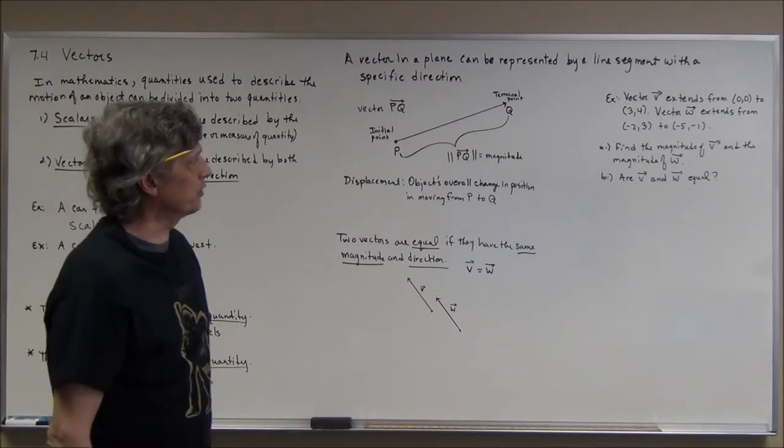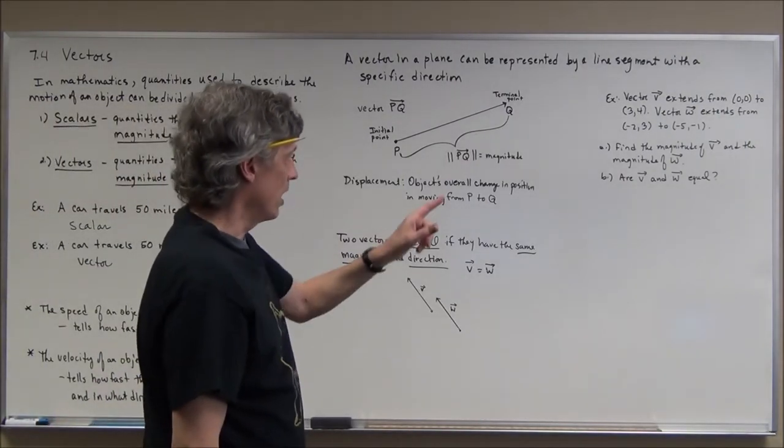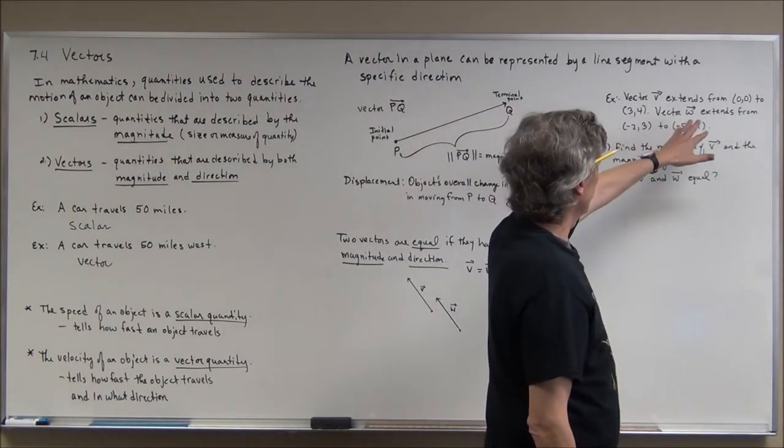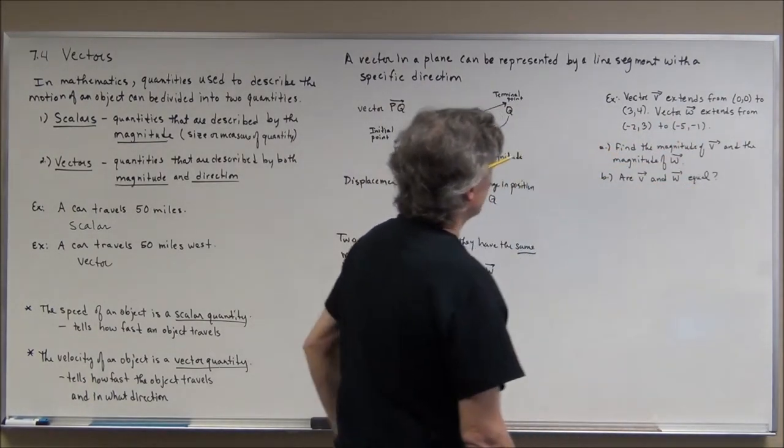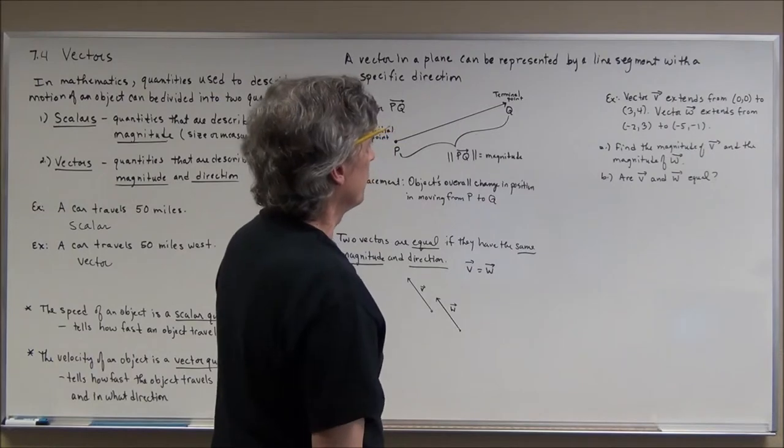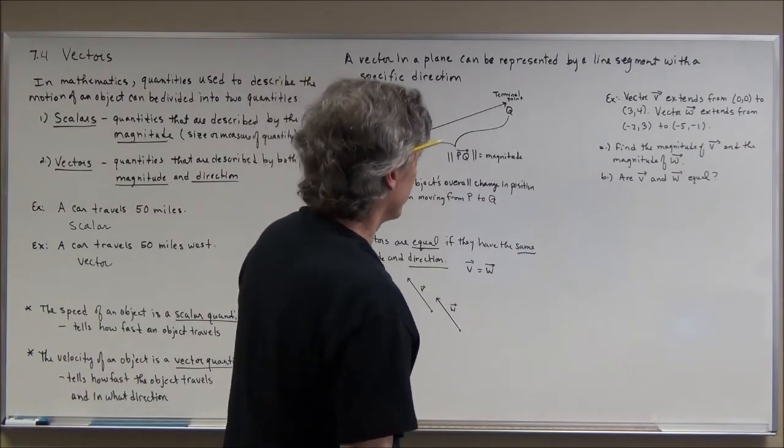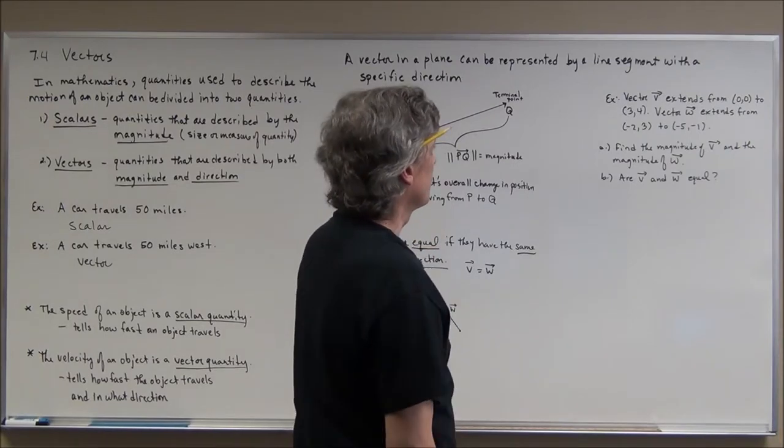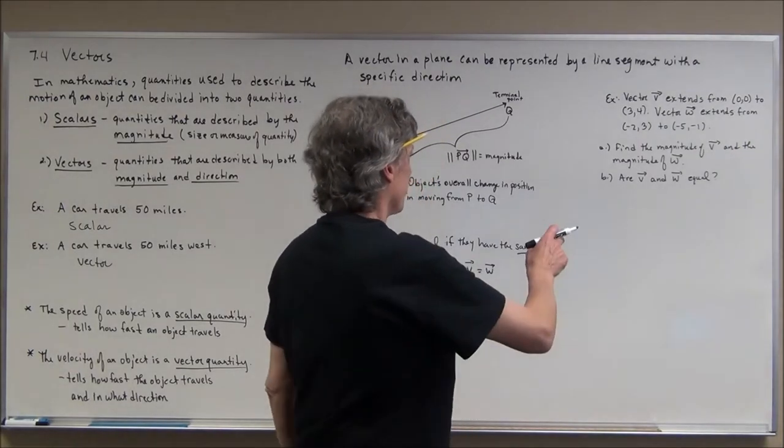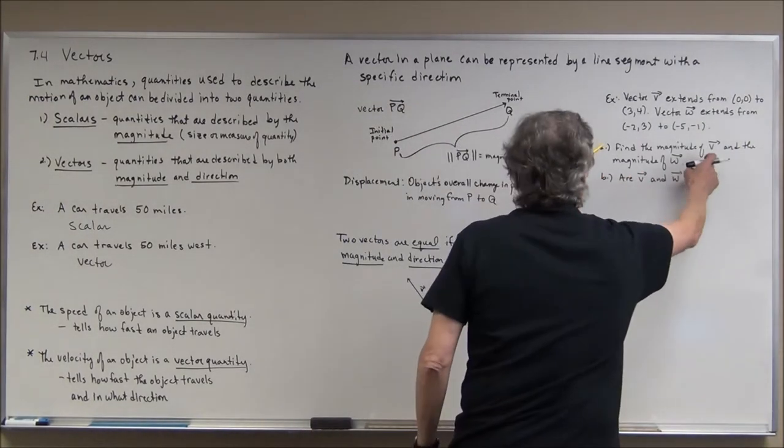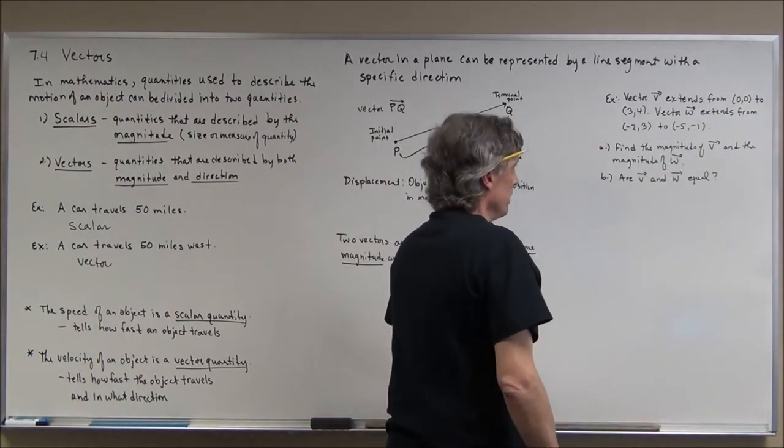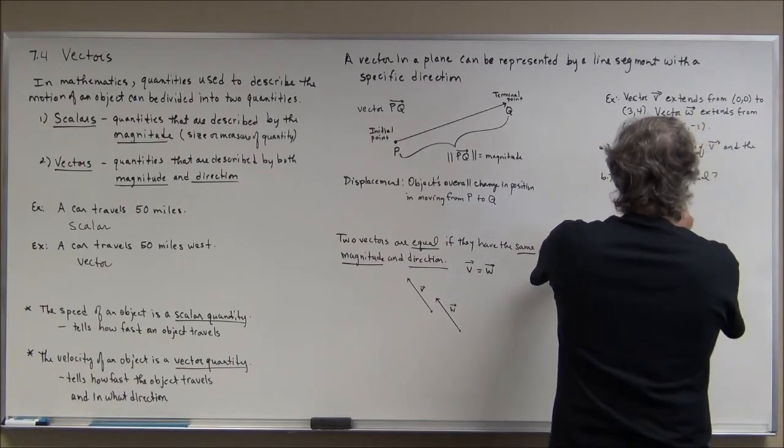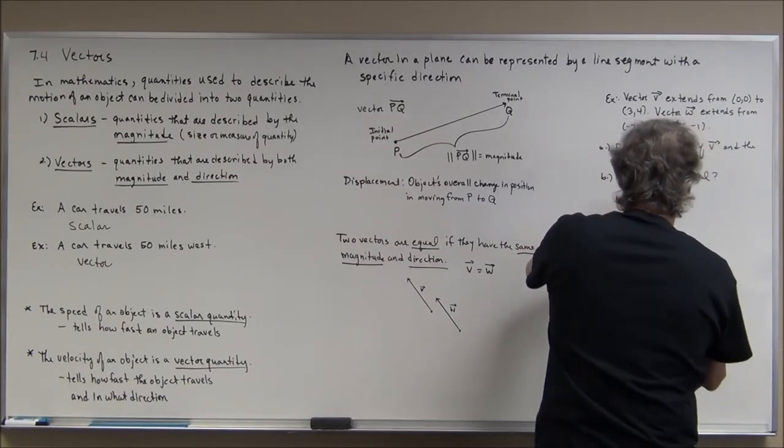Vector v extends from point (0,0) to point (3,4) on the Cartesian plane. Vector w extends from the ordered pair (-2,3) to the ordered pair (-5,-1). You're to find the magnitude of vector v and the magnitude of vector w. There's a way to do this algebraically but for now I'm going to draw a set of axes.